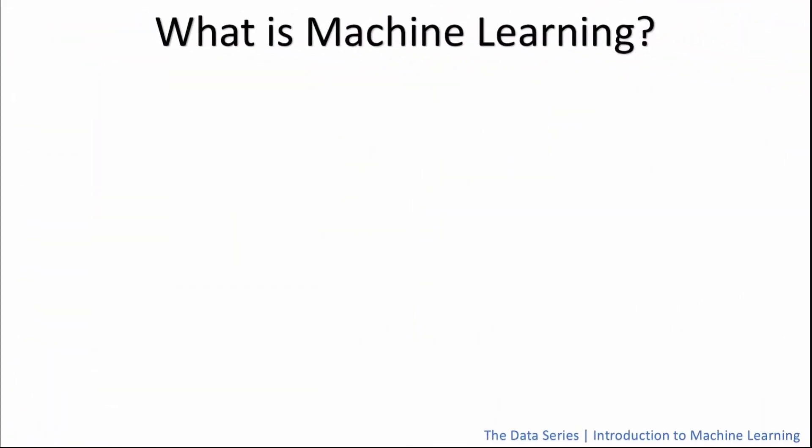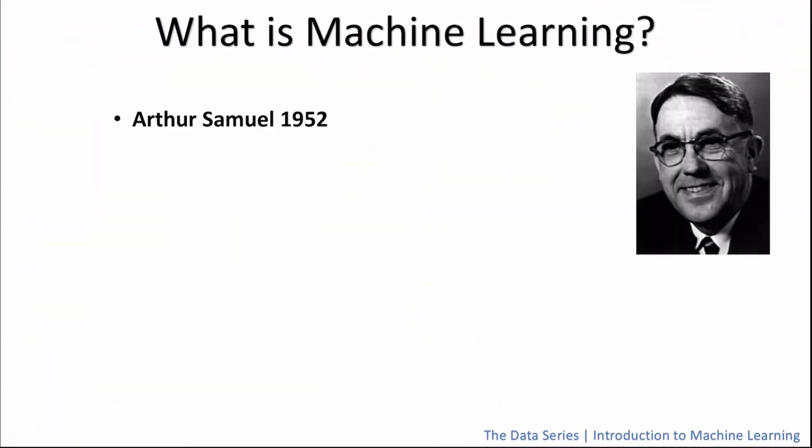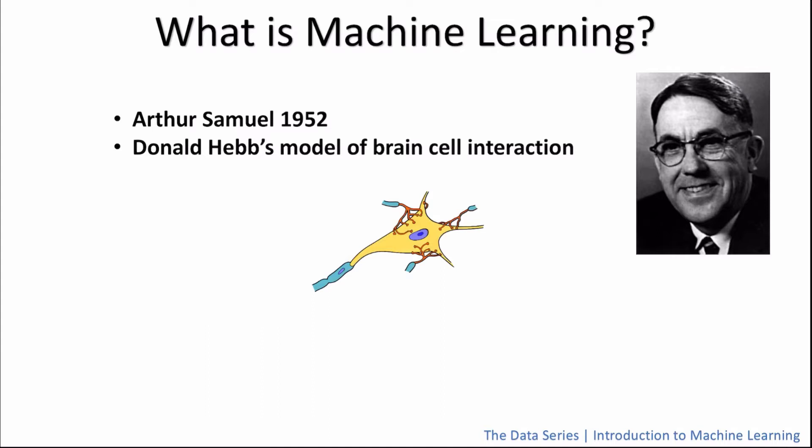So what exactly is machine learning? The term machine learning was invented by Arthur Samuel in 1952 to refer to the idea of giving machines the ability to make decisions. The concept of machine learning took great inspiration from the human brain, more specifically from Donald Hebb's model of brain cell interaction.